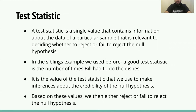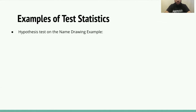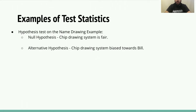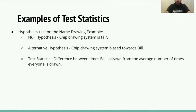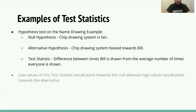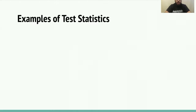For the name-drawing hypothesis test, the null is that the chip drawing system is fair and the alternative is that it's biased towards Bill. The test statistic is the difference between the number of times Bill is drawn and the average number of times everyone is drawn. Low values of this test statistic would point towards the null, whereas high values would point towards the alternative.